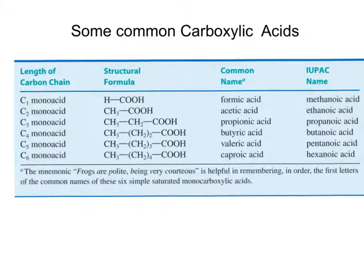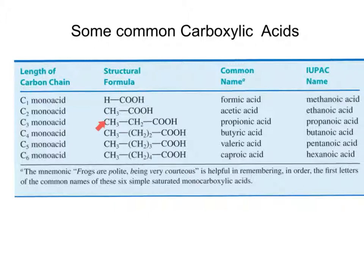We do use the IUPAC name quite often, but we also have common names used with various carboxylic acids. Looking at the first six carboxylic acids by chain length: one carbon is methanoic acid, two carbons is ethanoic acid, then propanoic acid, butanoic acid, pentanoic acid, and hexanoic acid. However, common names are often used in place of the IUPAC names.